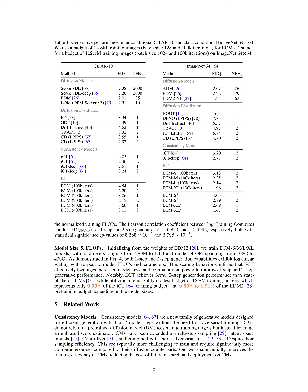Furthermore, ECT achieved better two-step generation performance than state-of-the-art consistency models while utilizing a modest training budget of 12.8 million training images, representing only 0.39% of the ICT training budget, and 0.60% to 1.91% of the EDM-2 pre-training budget, depending on the model sizes. Overall, ECT demonstrated superior efficiency and scalability in generating high-quality samples in one or two model steps on these datasets compared to ICT and diffusion distillation methods.